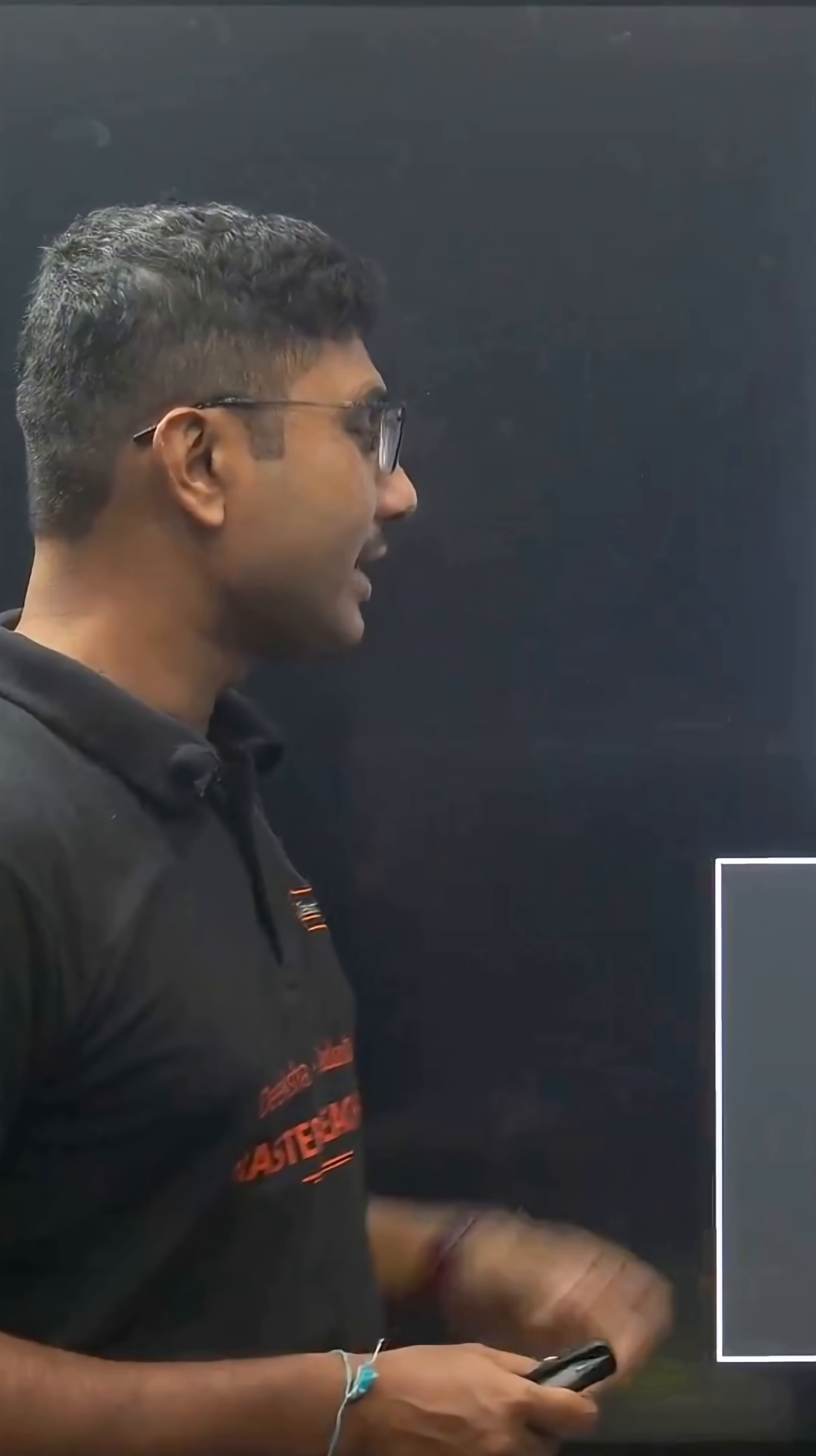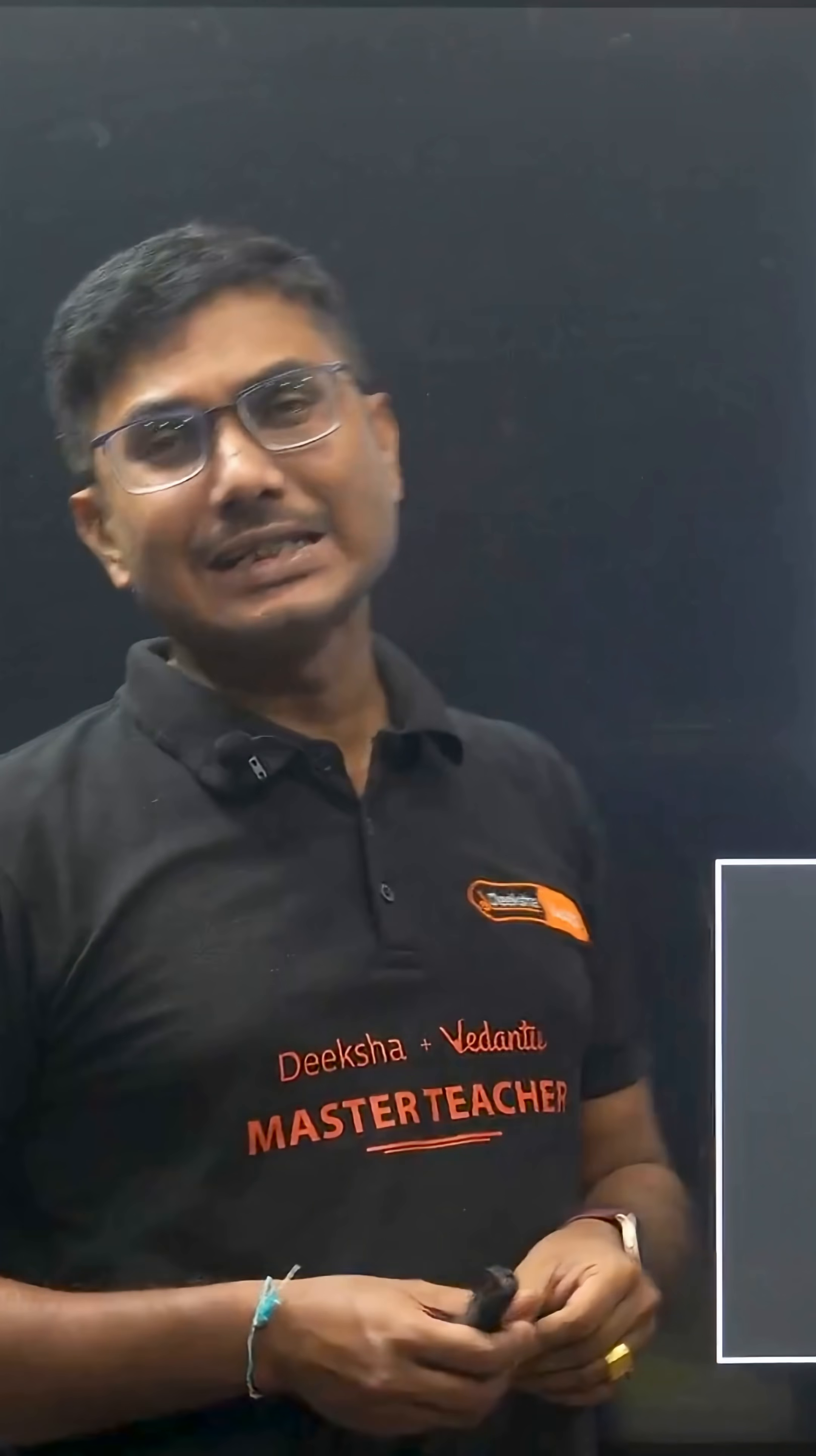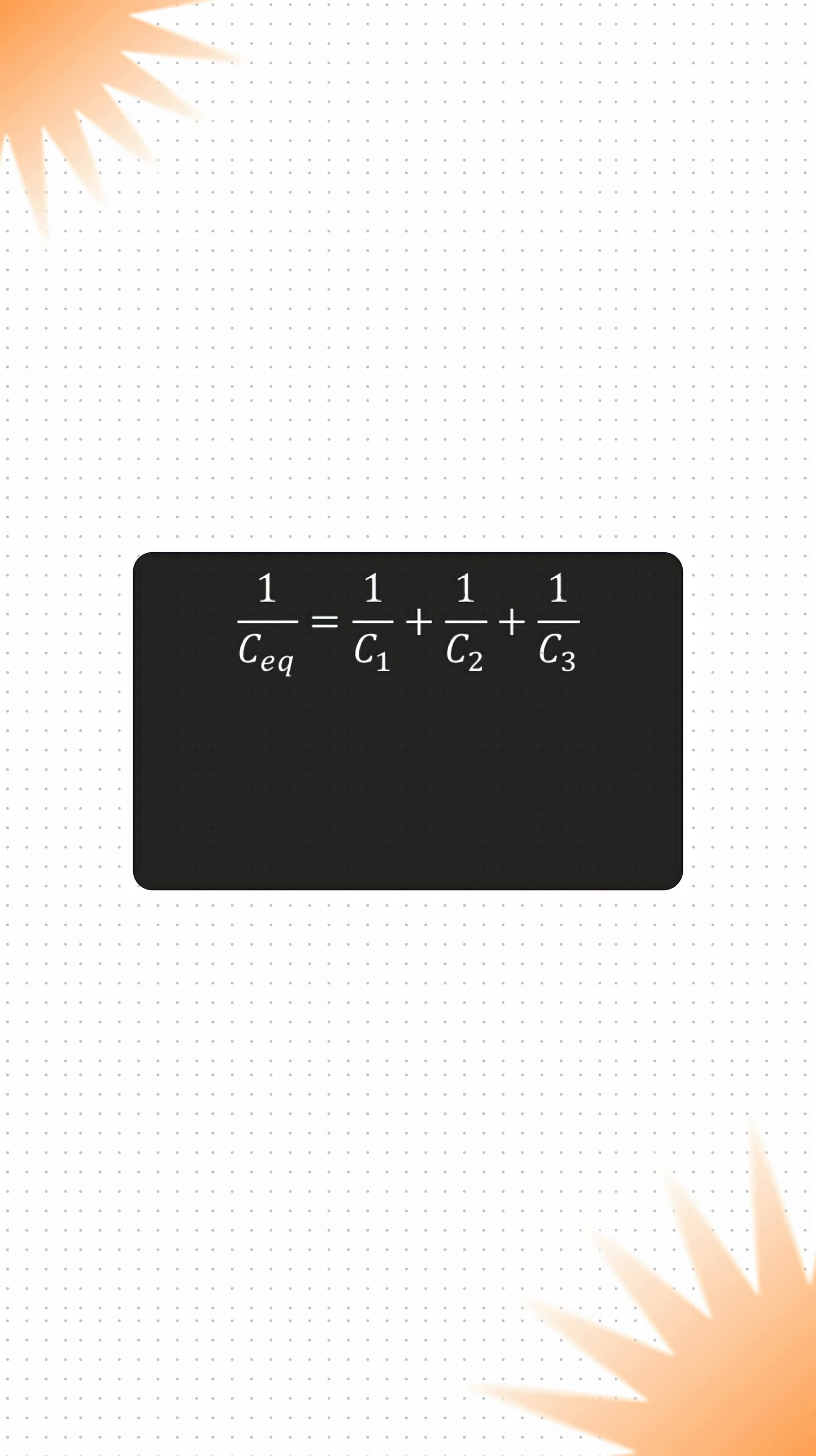The total charge remains constant. The formula for series combination of capacitors is given by 1/Ceq = 1/C1 + 1/C2 + 1/C3, and so on.